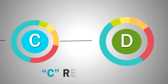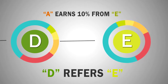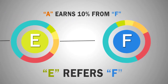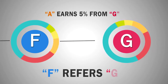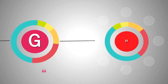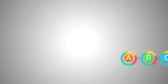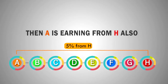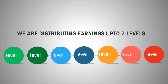If C refers D, then A gets 10% commission from D. If D refers E, then A again gets 10% from it. If E refers F, A gets again 10% from it. If F refers G, then A gets 5% commission. And if G refers H, then A again gets 5% commission from it. In the same way, A is earning from its 7th level, H, and we are distributing total earnings up to 7 levels.